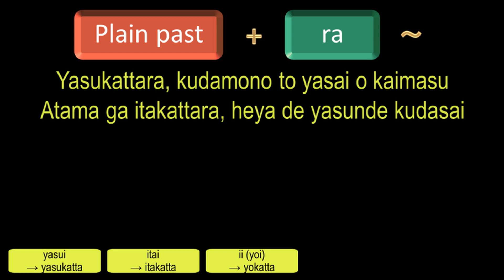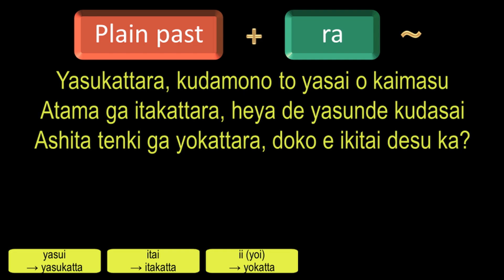And to ask 'if the weather is fine tomorrow, where do you want to go?' in Japanese it will be: Ashita Tenki ga Yokattara Doko e ikitai desu ka? Here, Ashita means tomorrow, Tenki means weather, Doko means where, and Ikitai means want to go. Since it is a question, it ends with Ka with a rising intonation.